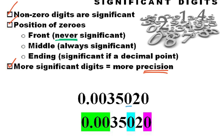Zeros between two other significant figures are always significant, because those non-zero digits are significant, so the 1 in between has to be significant as well. And then the zeros at the end — those are significant if there's a decimal point. So in this case, this 0 would be significant because of the decimal point, making this a 5 significant figure number.